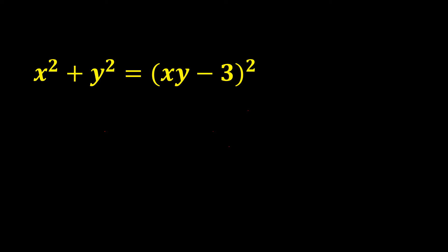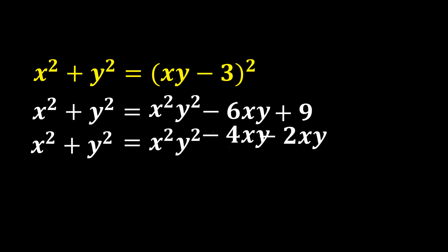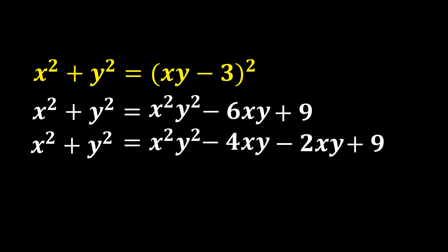The given equation is x² + y² = (xy - 3)². We can write the (a - b)² formula: x²y² - 6xy + 9. Now let us split -6xy as -4xy - 2xy, keeping +9 as it is.